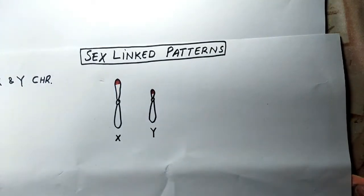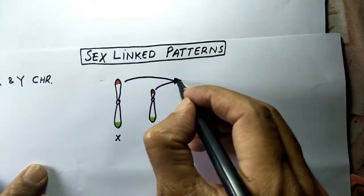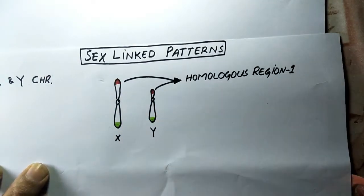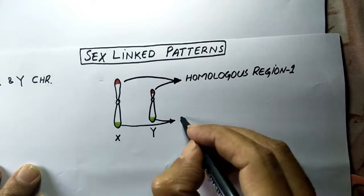Both of these two chromosomes contain differential regions as well as homologous regions: homologous region 1 and homologous region 2.